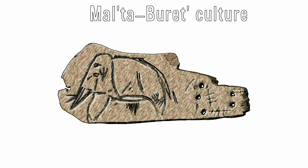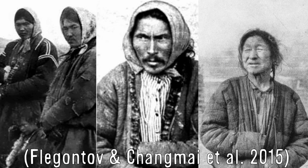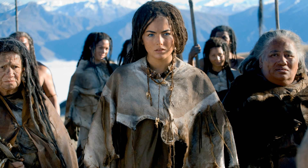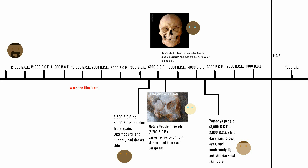Siberian peoples at around this time looked different as well. The Malta-Buret culture was very closely related genetically, and probably physically, to Native Americans, as well as several still-existing nomadic Siberians such as the Kets - the closest non-American living relatives to Native Americans. They possessed brown eyes, dark hair, and dark skin, and many archaeologists have suggested they would have an appearance close to their surviving relatives. If the film is set in Siberia, they should have used more Native American-looking actors, or in Eastern Europe, darker-skinned, dark-haired, brown-eyed actors. Significantly light-skinned Europeans wouldn't be common until about 6000 BCE.